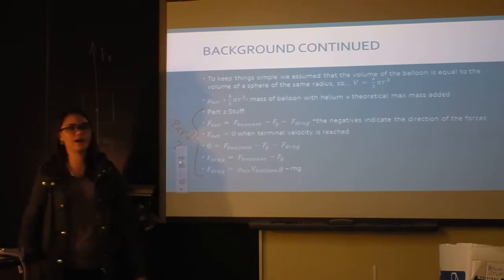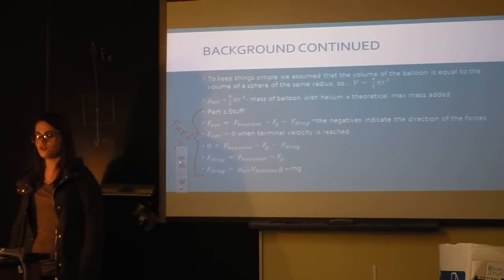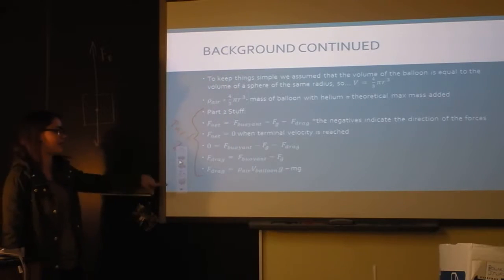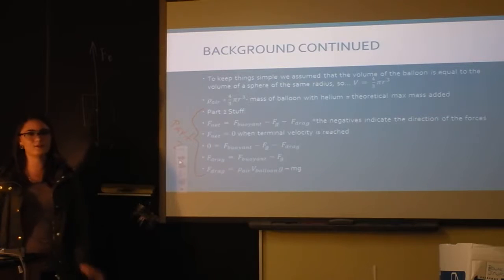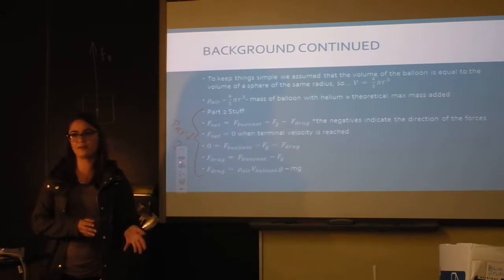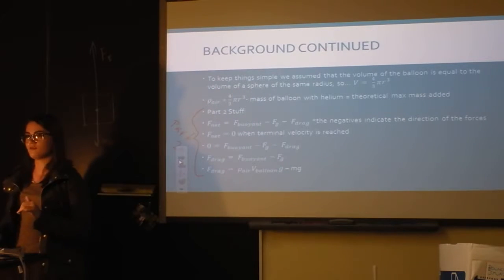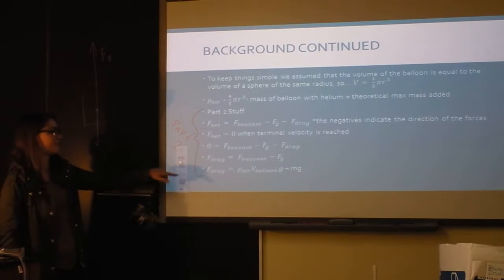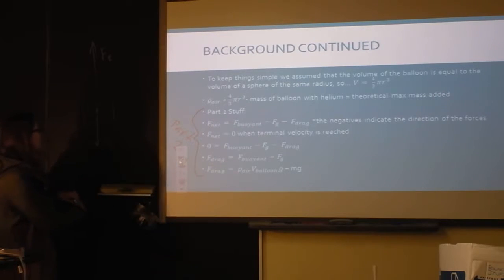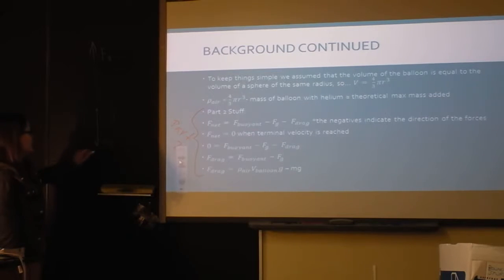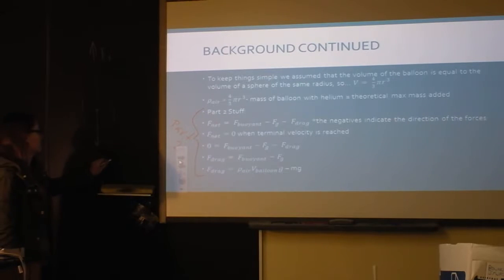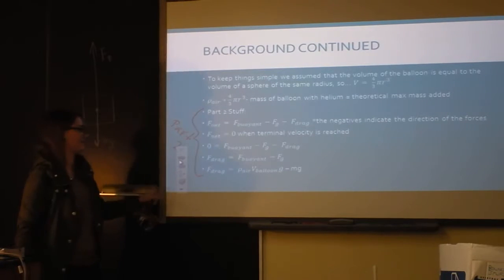Part two is where I tracked the movement of the balloon upwards, which tells me the drag force from air resistance. So I had two parts: one was figuring out the equilibrium point between gravity and the buoyant force, and the other was studying air resistance. Once the balloon reaches terminal velocity it's in equilibrium, so the drag force equals the buoyant force minus mg.